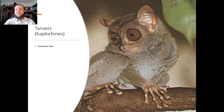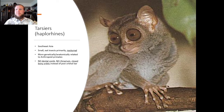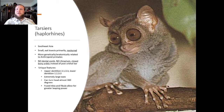Tarsiers are found in Southeast Asia. They're small, eat insects primarily, and are primarily nocturnal — though more genetically and anatomically related to anthropoids, according to the cladistics approach. There's no dental comb and no rhinarium. They have closed bony orbits instead of a post-orbital bar. They have a unique upper dentition of 2-1-3-3 and lower of 1-1-3-3. They have extremely large eyes and can turn their heads almost 360 degrees, and they have a fused tibia and fibula allowing for greater leaping power.